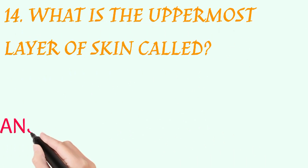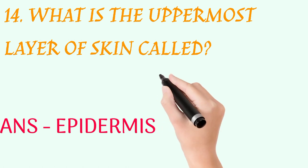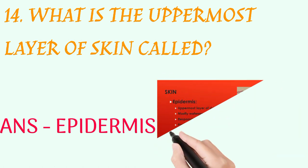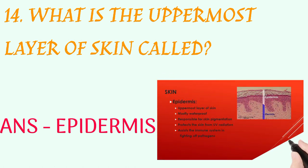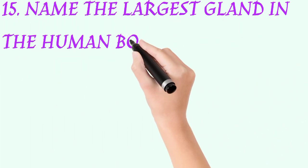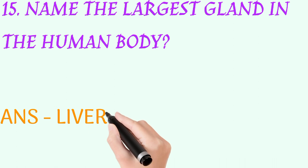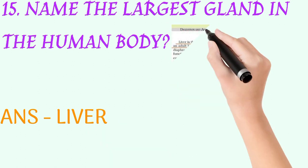What is the uppermost layer of skin called? Answer: epidermis. Name the largest gland in the human body. Answer: liver.